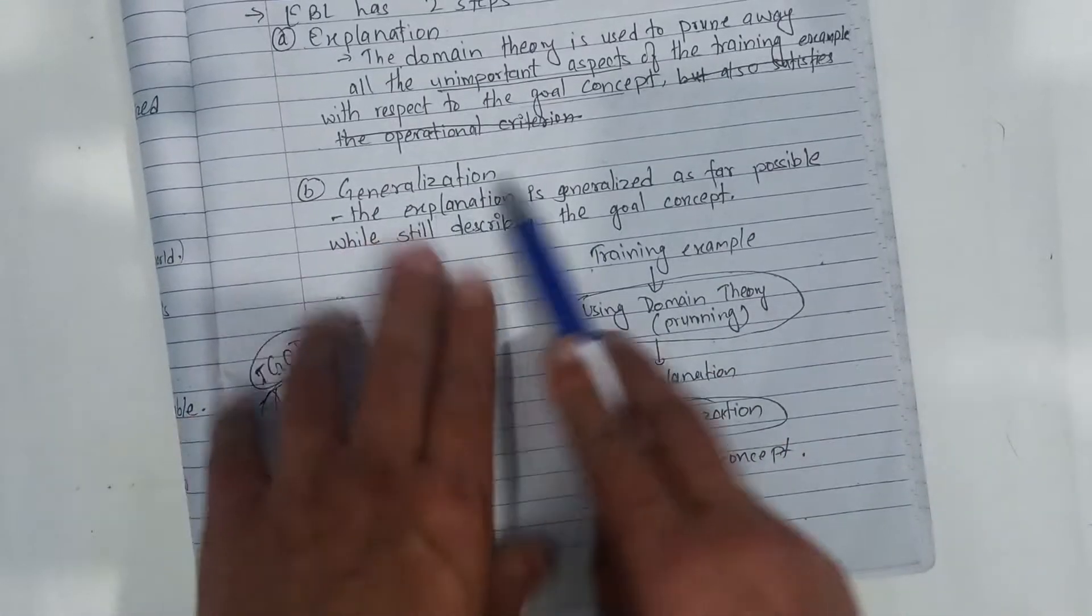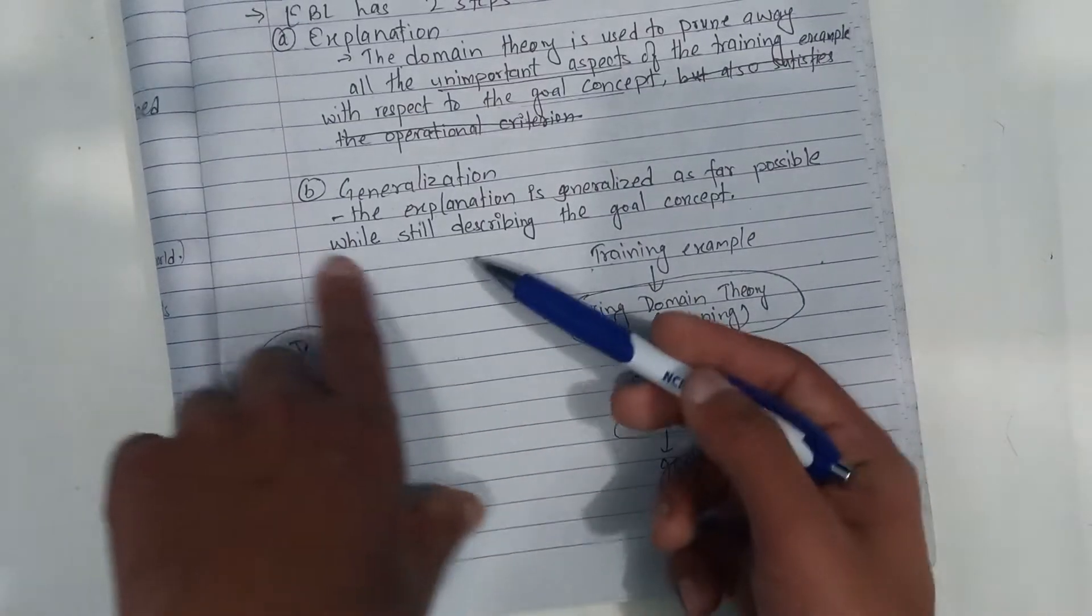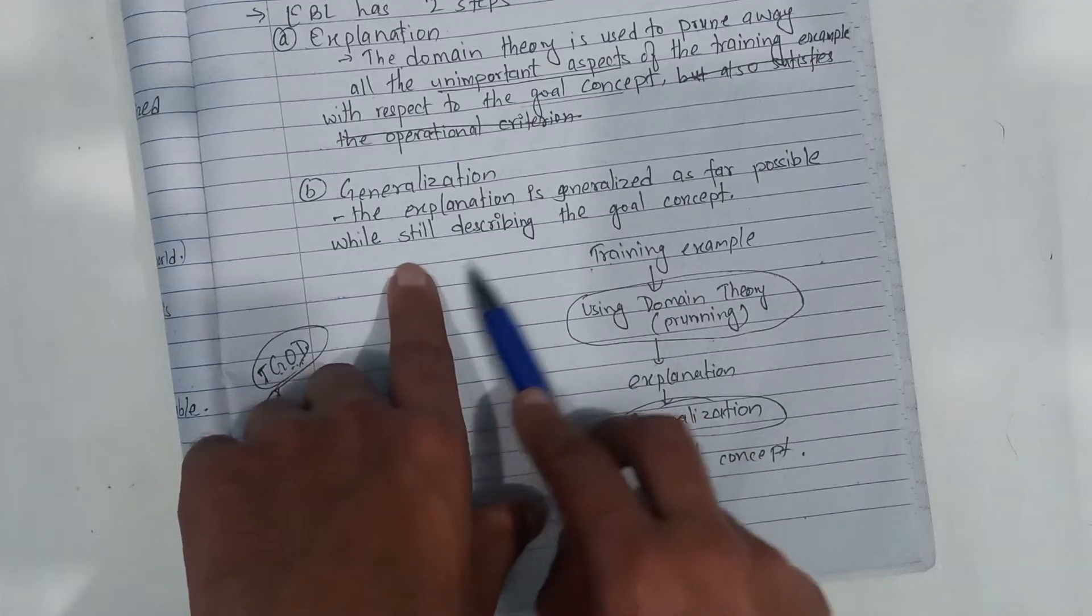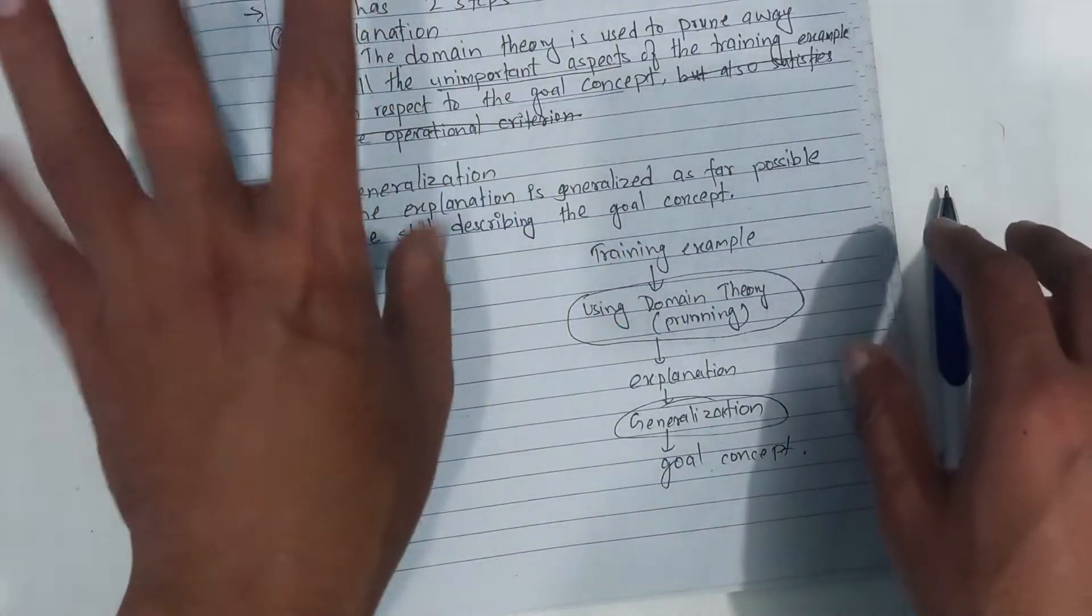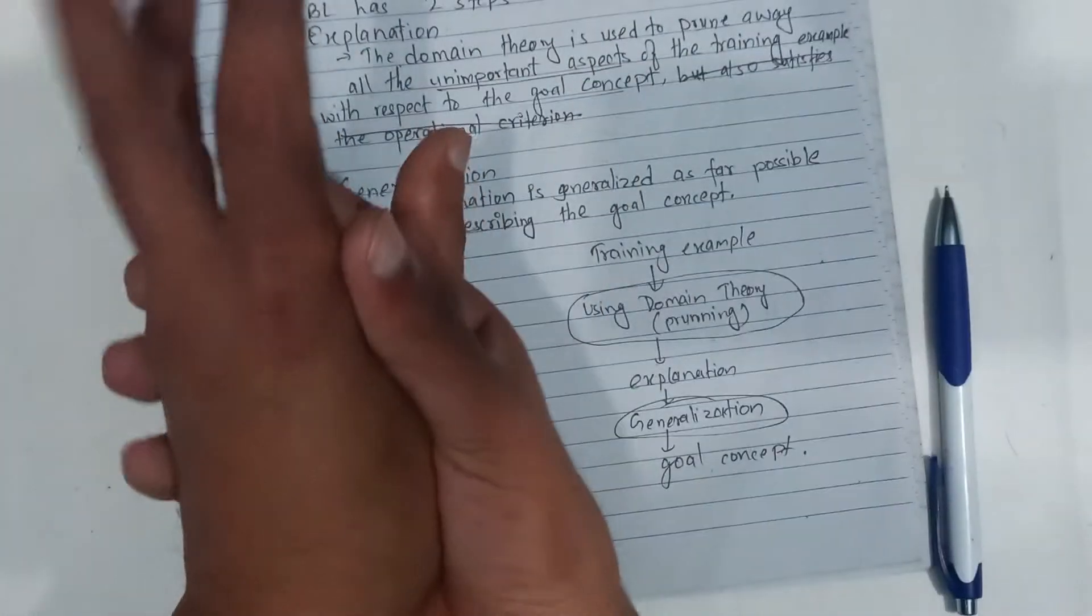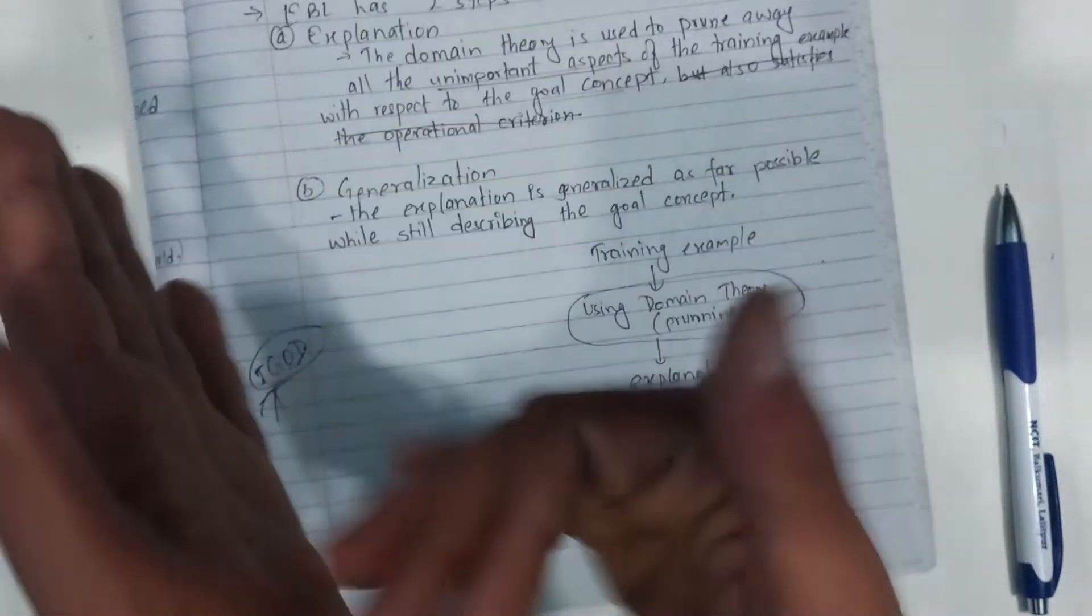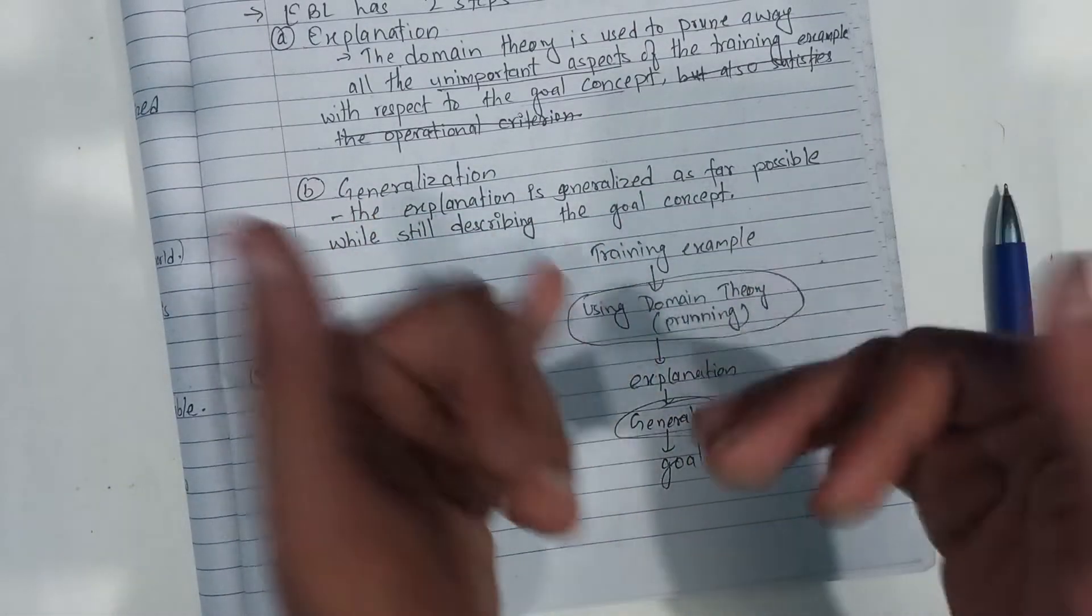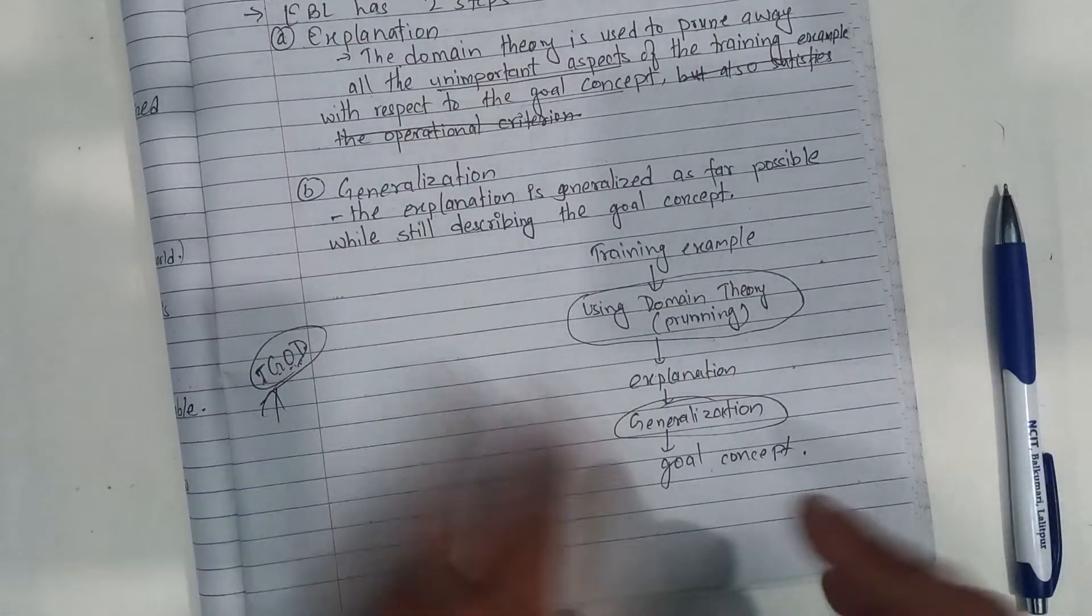Now what happens? The generalization process. The generalization, what happens? Explanation is generalized as far as possible while still describing the goal concept. Goal concept describing as generalized as possible. Explanation is generalized, training example is pruned, and our goal concept is maintained.